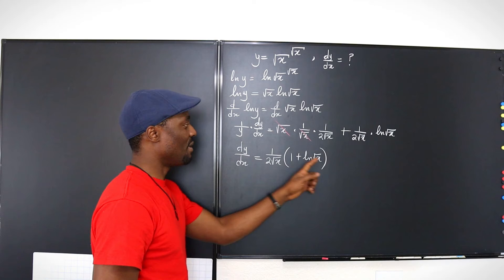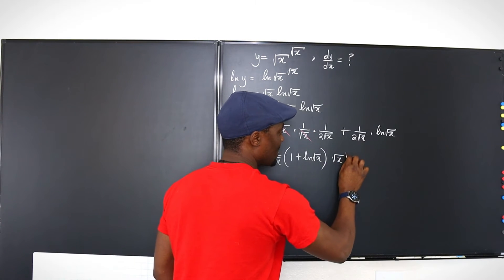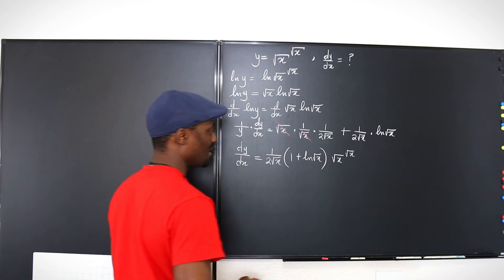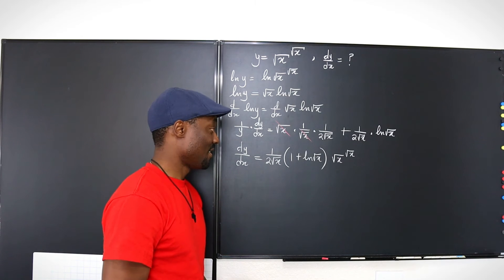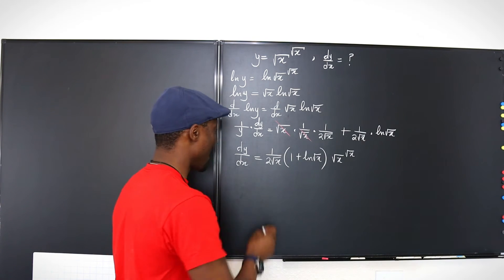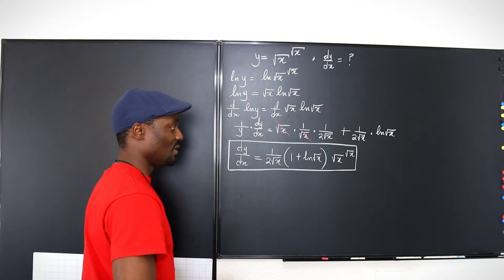Then I'm going to multiply it by y. That y is this function we had at the beginning, square root of x to the square root of x. Listen, I don't know what else I want to do. I will take this as my final answer. That's dy/dx.